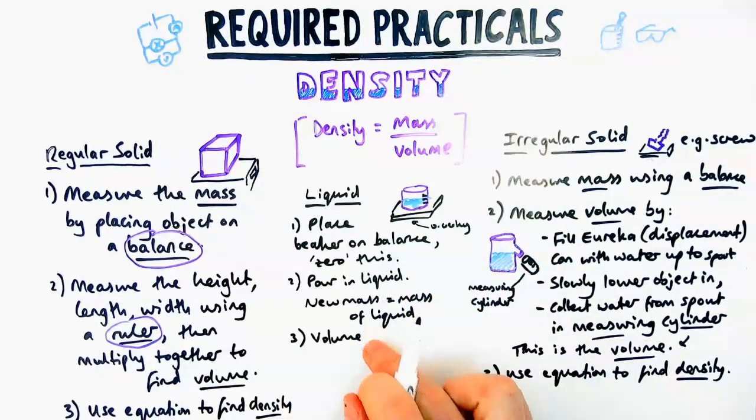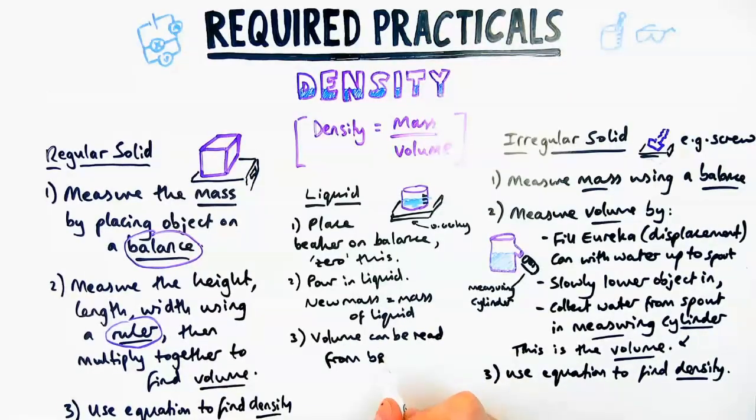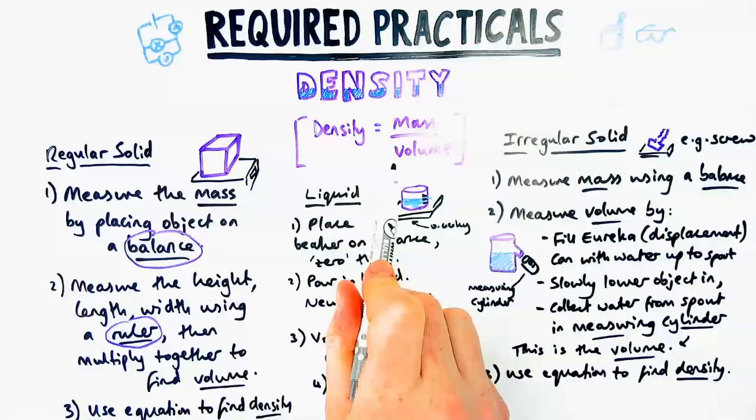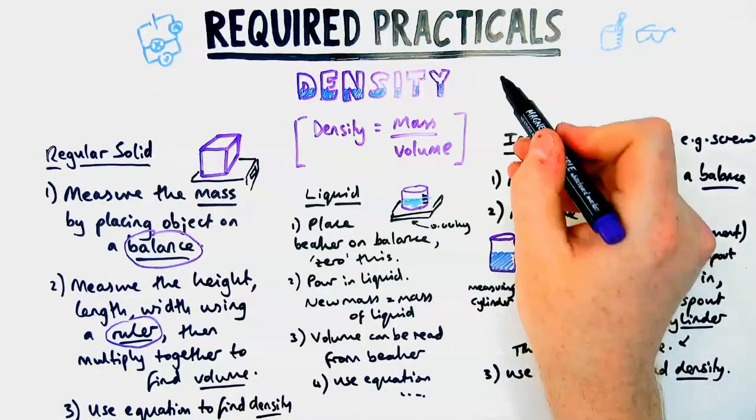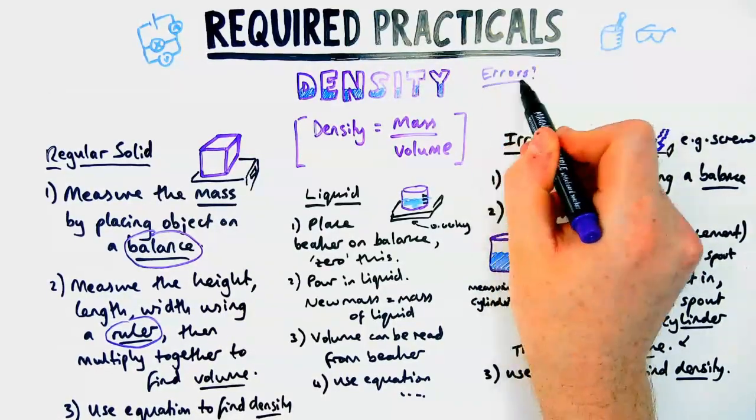The volume you can measure using the little gradients and the scale on the side of the beaker, or you could use a measuring cylinder. Then just use the equation: mass divided by volume to find the density of that liquid. You do need to know all three methods, but there are similarities between them.